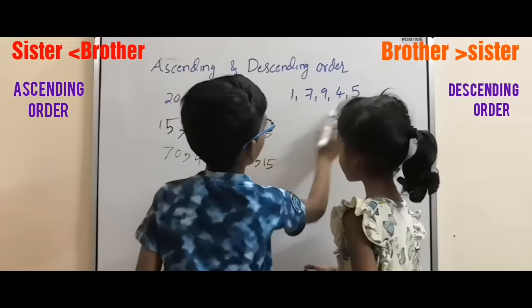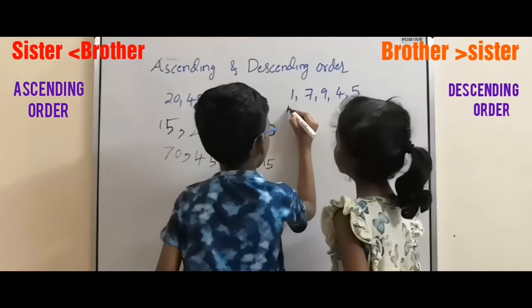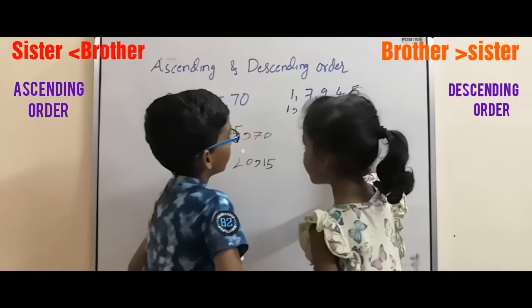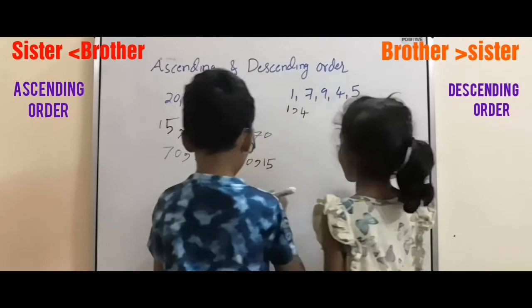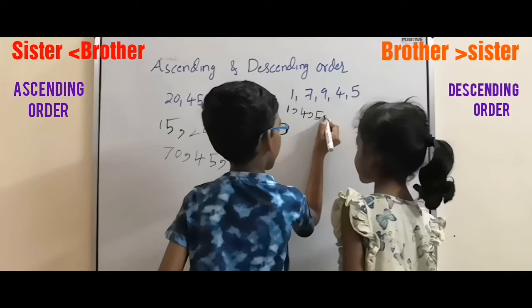First the small number — one. Very good. Next bigger number — four. Next bigger number — five. Next bigger number...